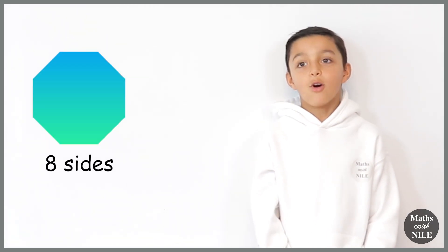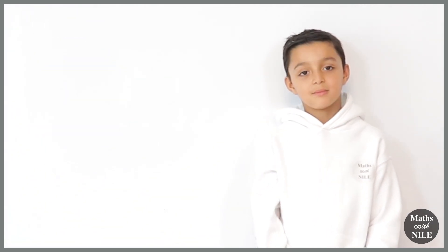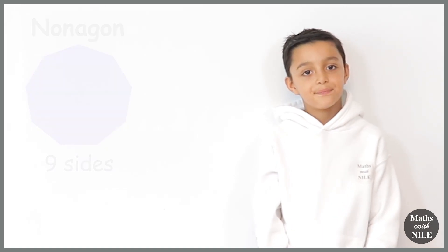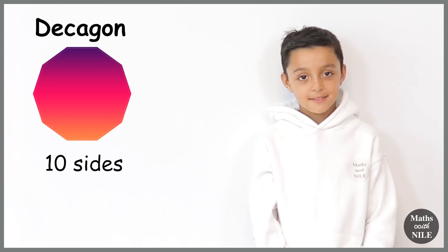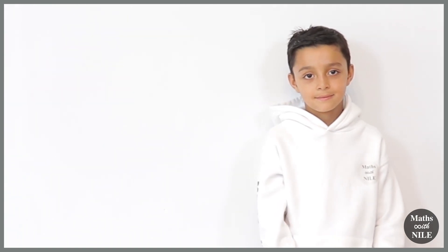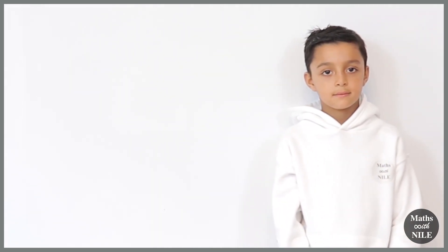What about a shape with eight sides? Octagon. Octagon. Nine sides. Nonagon. Nonagon. And ten sides. Decagon. Decagon. Very good. So we've gone through the shapes from three to ten sides.